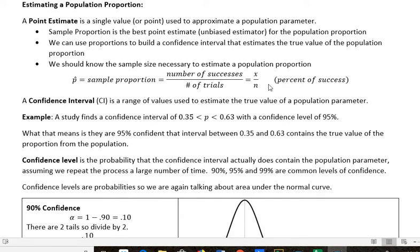A confidence interval is a range of values used to estimate the true value of a population parameter. We give basically an interval, like from 0 to 10, and we're pretty sure that the actual true proportion is within this interval.